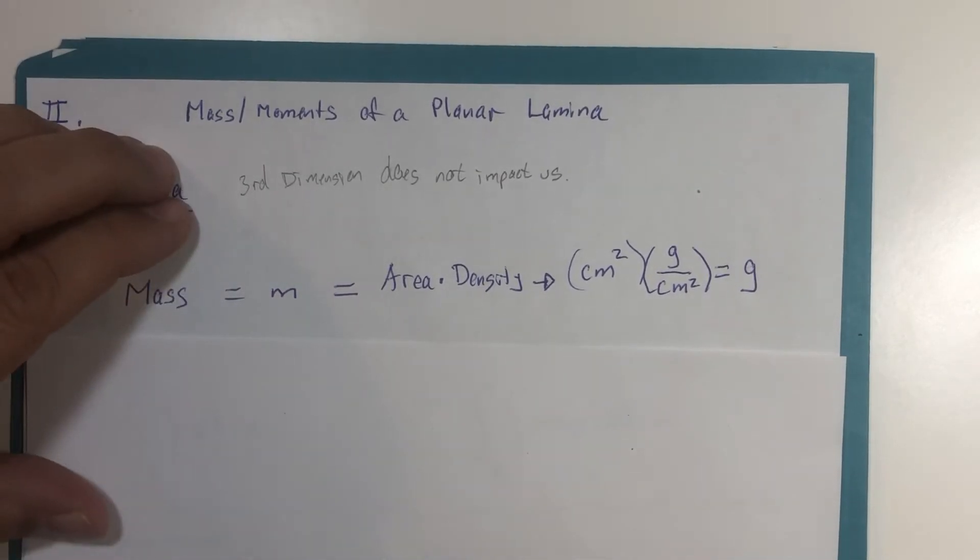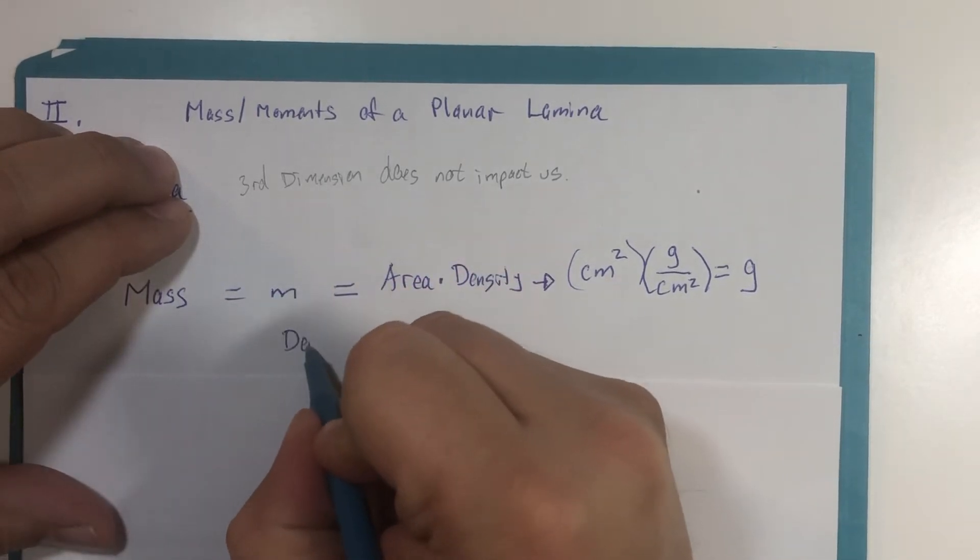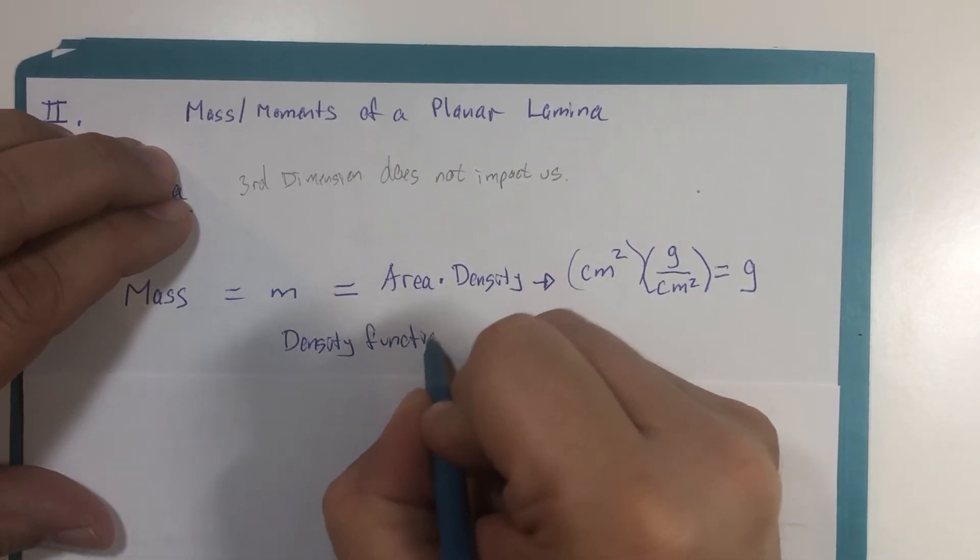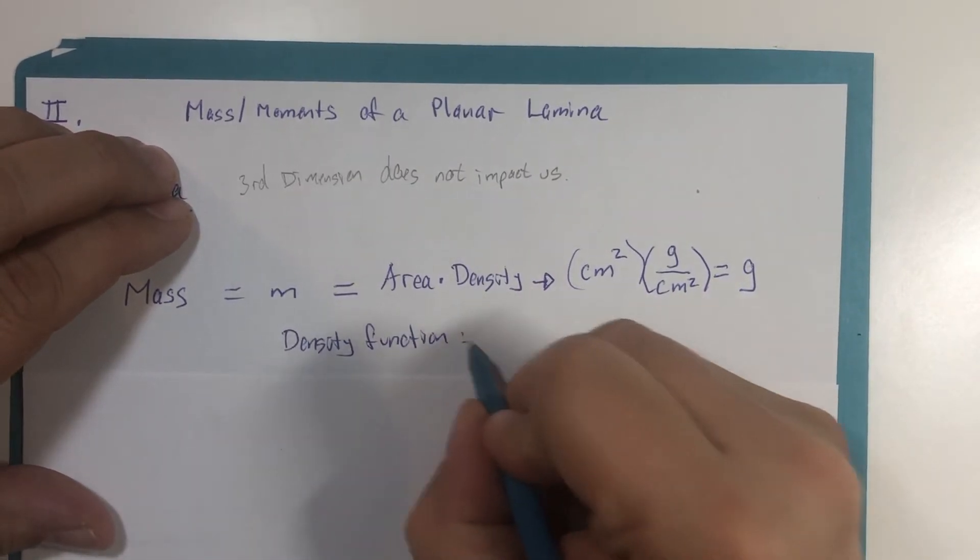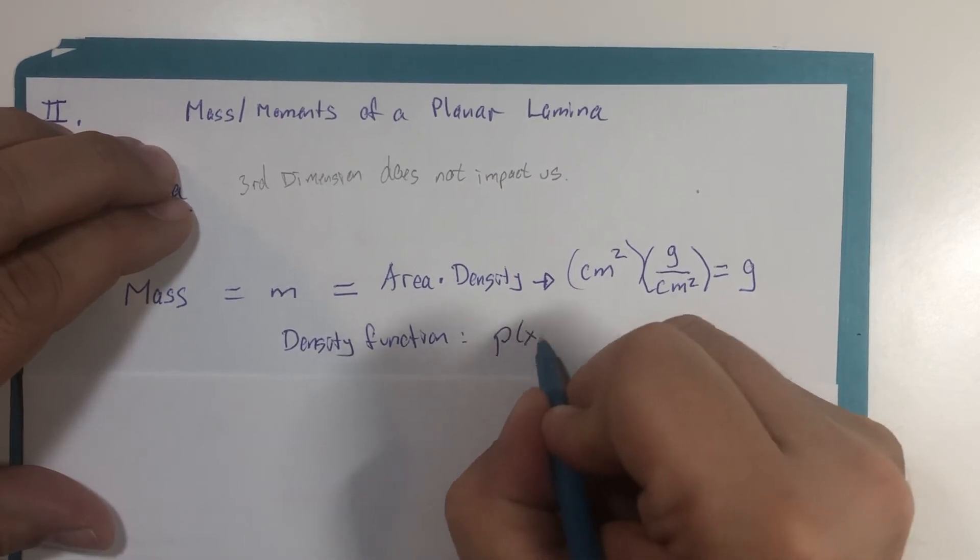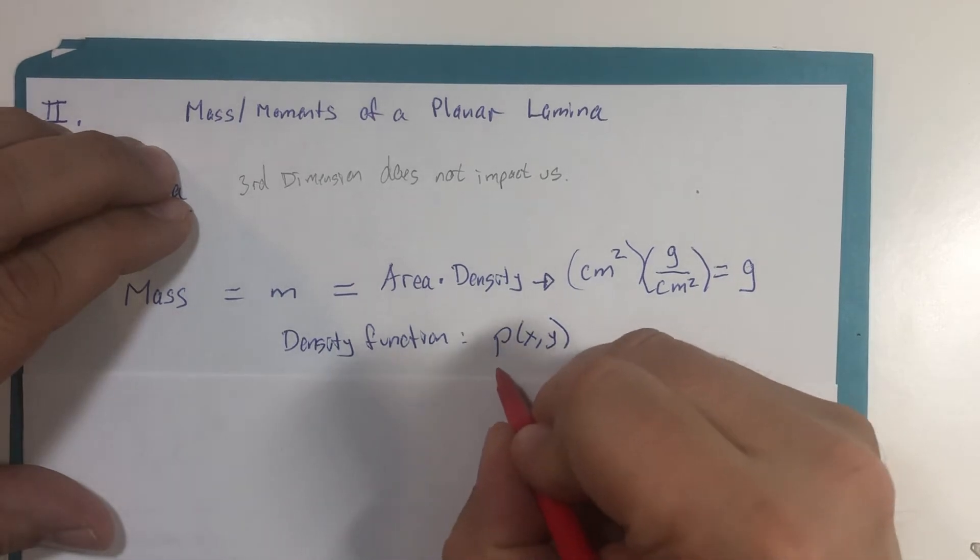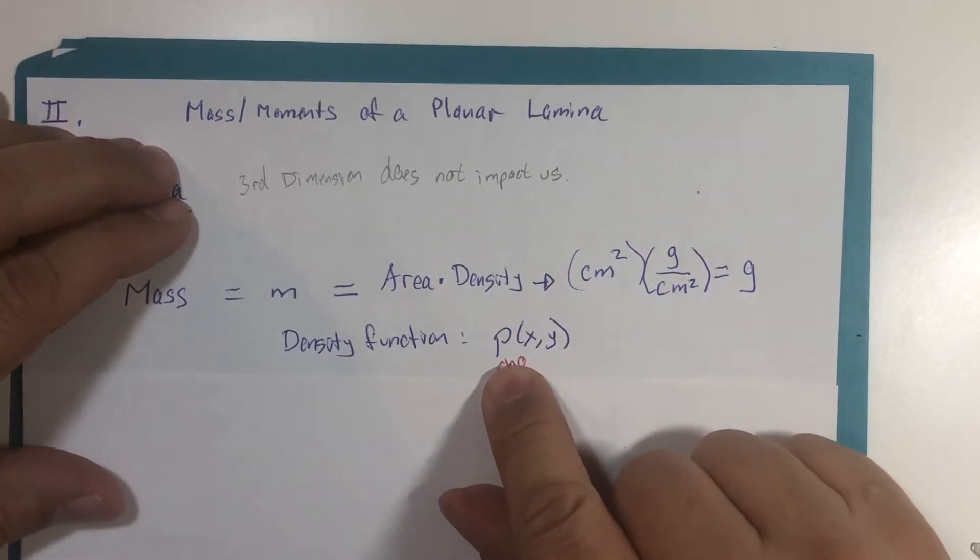For our problems, we're going to use a density function. That is the Greek letter rho. When I draw it, it looks like the letter P in the English alphabet, but this is rho.